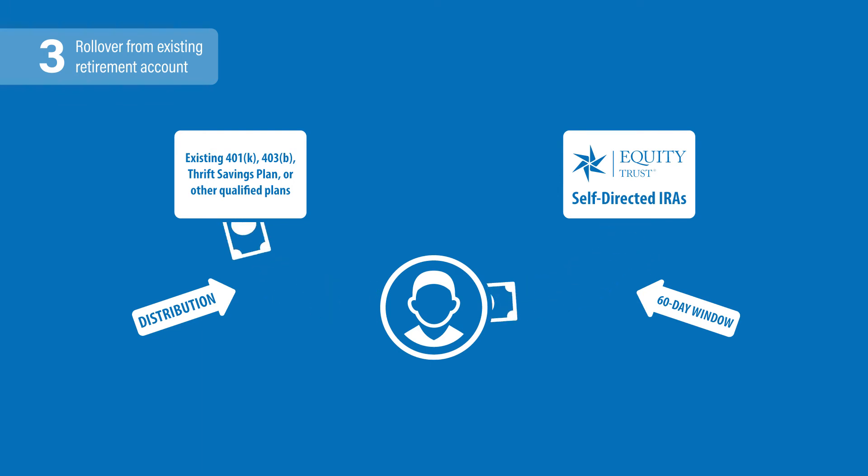Contact your plan administrator for instructions. As with transfers, it's possible to do a full or partial rollover. It's also important to note that you are limited to one rollover within a one-year period. This limitation does not apply to direct transfers from one IRA trustee directly to another. Check irs.gov for more information.